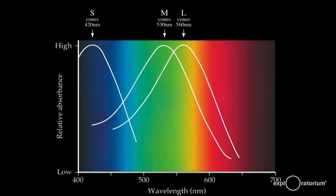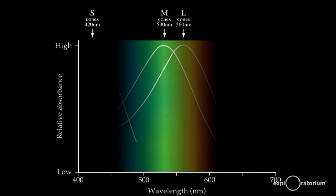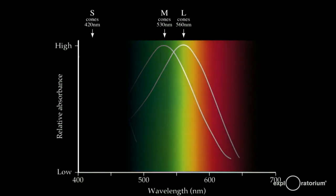In humans, there are three types of cones, each corresponding to a different range of colors. Here, they're labeled S for short wavelength, M for medium wavelength, and L for long wavelength. The S cones cover the blue and violet end of the visible spectrum. The M cones correspond to the middle or greenish range, and the L cones correspond to the reddish end of the spectrum.